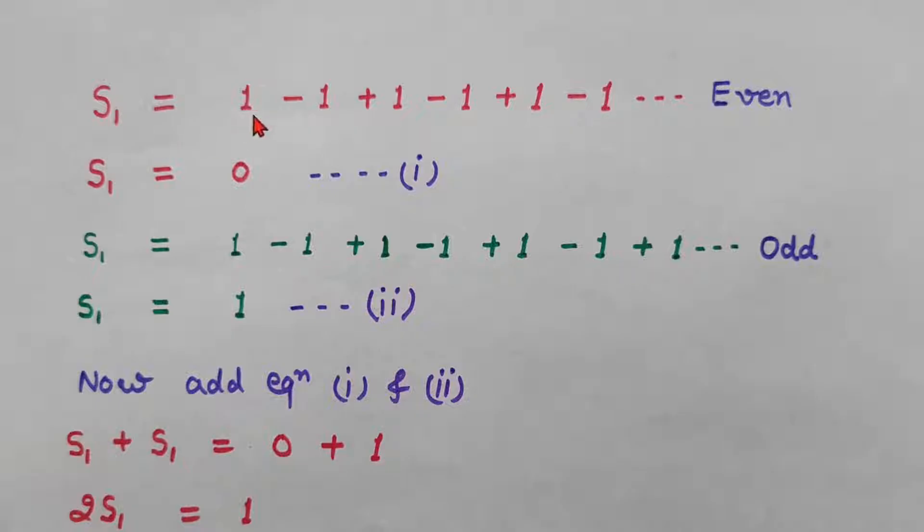So what will be the summation of this series? As plus 1 and minus 1 are paired, we know in every even number we can make pairs. So plus 1 and minus 1 will be cancelled out. So its summation will be 0. I have called this as equation number 1.